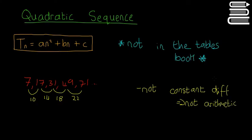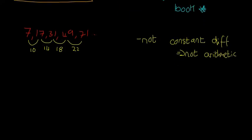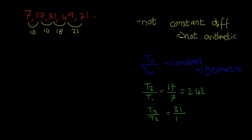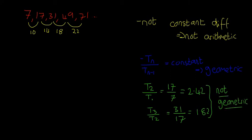Next, maybe it's geometric. If T(n) divided by T(n−1) equals a constant, then it's geometric. So we test: T(2)/T(1) = 17/7 ≈ 2.42, and T(3)/T(2) = 31/17 ≈ 1.82. Since those aren't the same, there's no constant ratio, so it's not geometric.